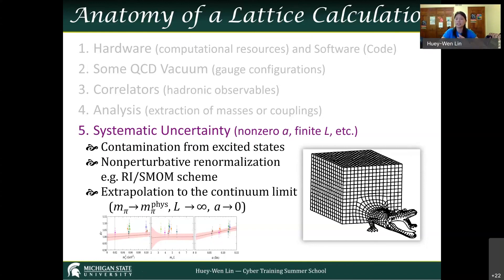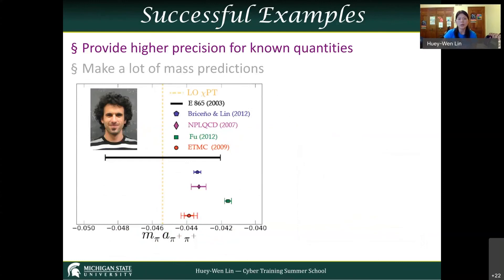A lattice number is not actually the true lattice QCD answer for a particular quantity — there are many parameters with assumptions. The lattice spacing is the resolution, and you want to make sure your answer doesn't change with it. The box needs to be big enough. If it's too small compared to the particle you want to study, you see very strange behavior. I like to use this logo as a reminder — artifacts can bite you and give very wrong answers.